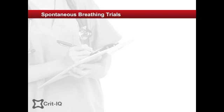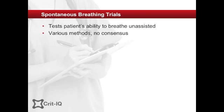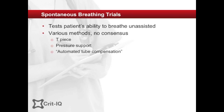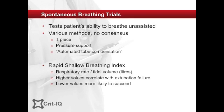In some instances, removing the patient from ventilator support and observing their response can give an idea of how successful extubation will be. A variety of methods for this test have been described, including a TP system and using pressure support with minimal settings. Some ventilators have an automated tube compensation setting that can reportedly remove any respiratory support other than that required to overcome the imposed resistance of the endotracheal tube. A measure of the adequacy of spontaneous breathing, known as the Rapid Shallow Breathing Index, has been proposed, but its utility remains the subject of debate.